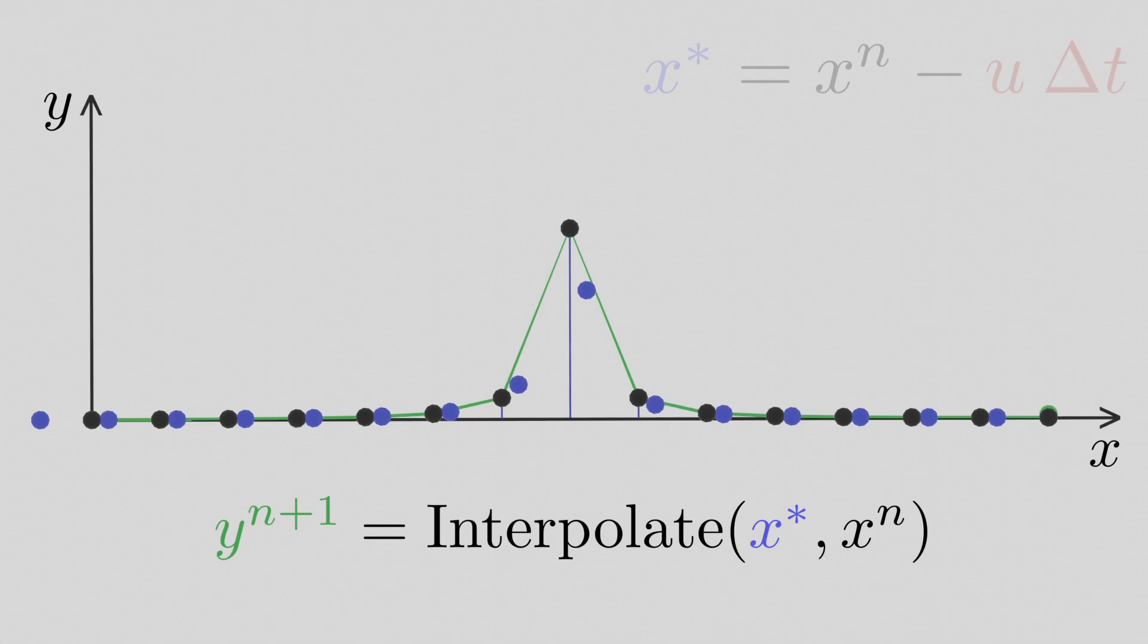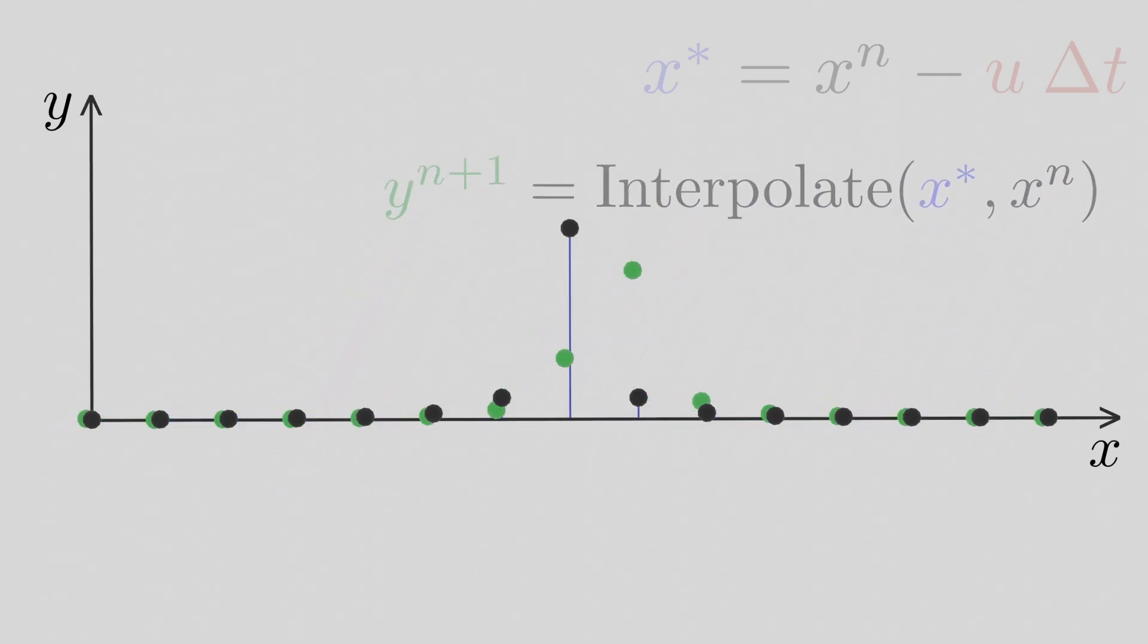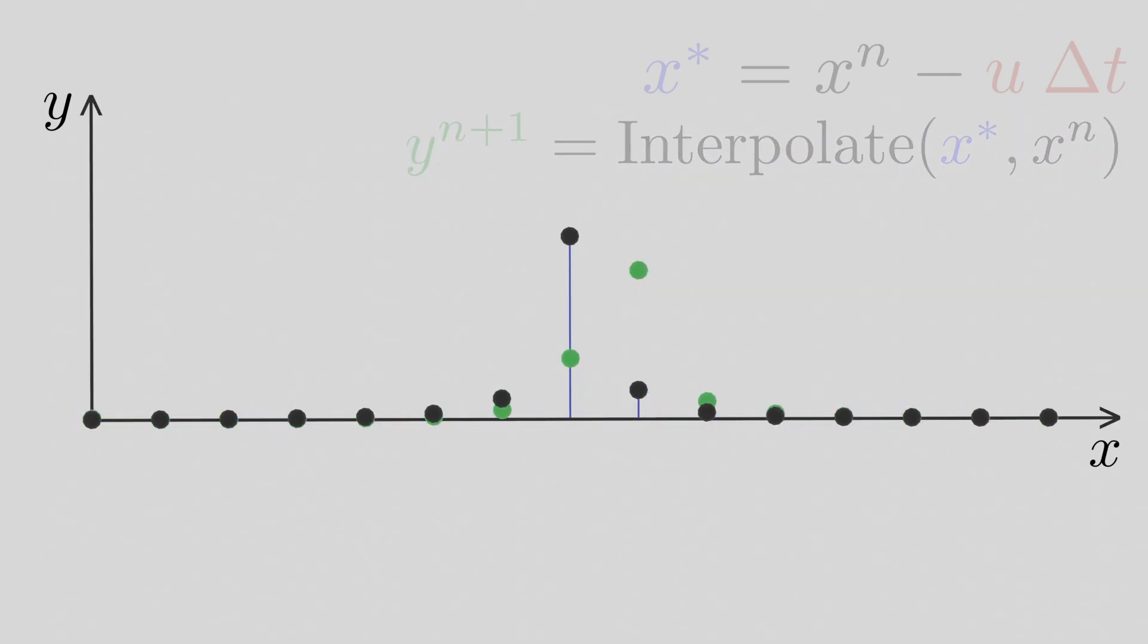So we just need to check the y-values returned by the interpolation at the blue dots x-coordinates. After that, we just have to update the current values with the recent interpolated ones.